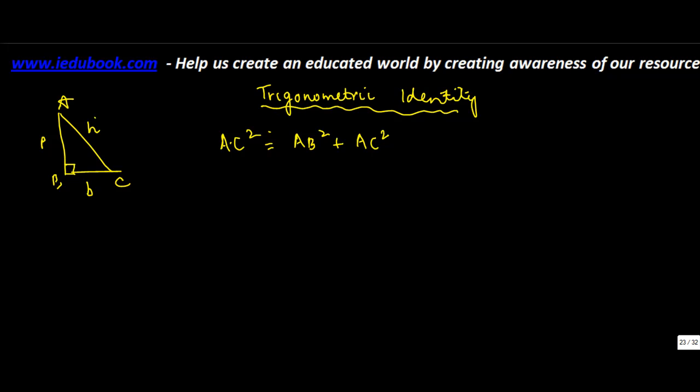So in two of the earlier videos I divided all the sides first by AC square and then by AB square. Now let us try AC square. Sorry, this is BC square. So dividing by BC square both the sides.